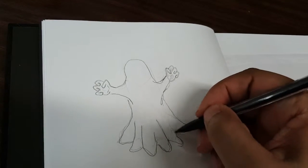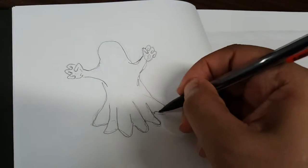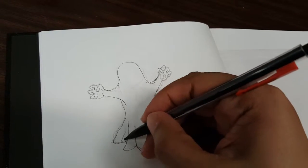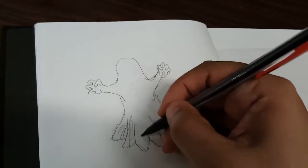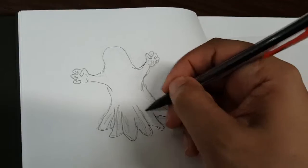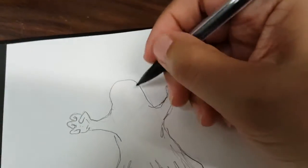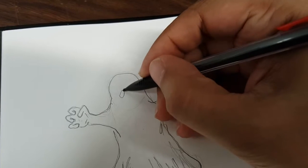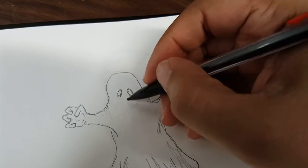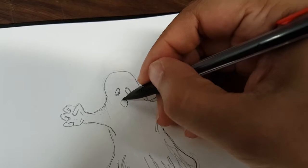All right, give me a little bit of definition here and there. Let's go for a quick eyes, two little circles. They don't have to be perfect.